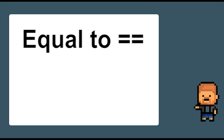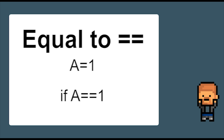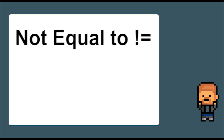Here is one that people get a little confused with — it is the double equals symbol, two equal signs together. If I said A equals 1, it would give A the value of 1. But if I asked if A is equal to 1 using double equals, it would check the value in A and see if it is equal to 1, and if it is, it will do the code that follows. If I used A exclamation mark equals 1, it would check the value in A and see if it is not equal to 1, and if it is not equal, it will do the code that follows.